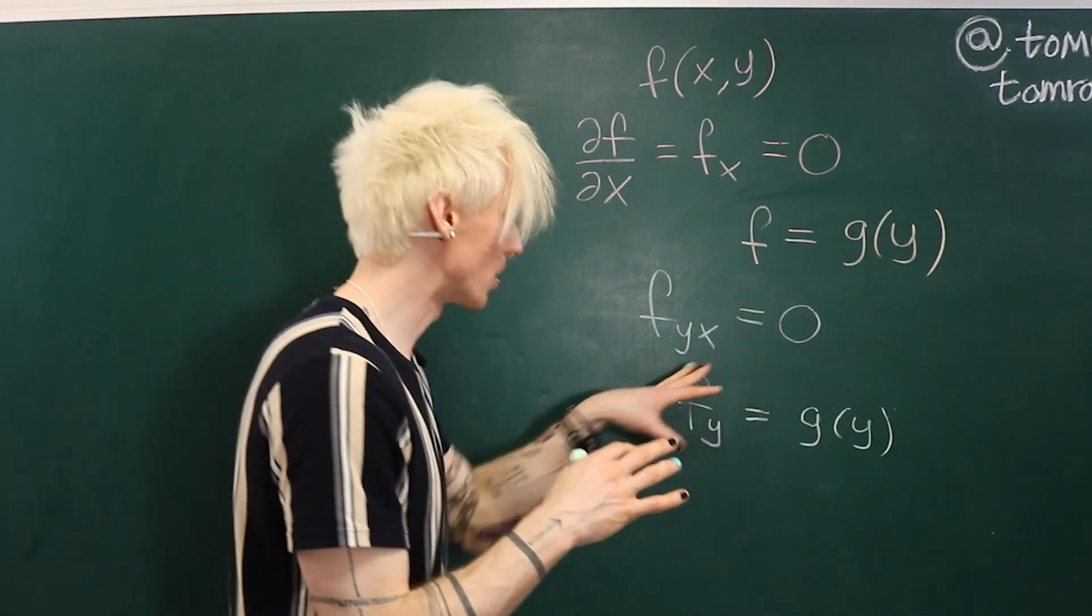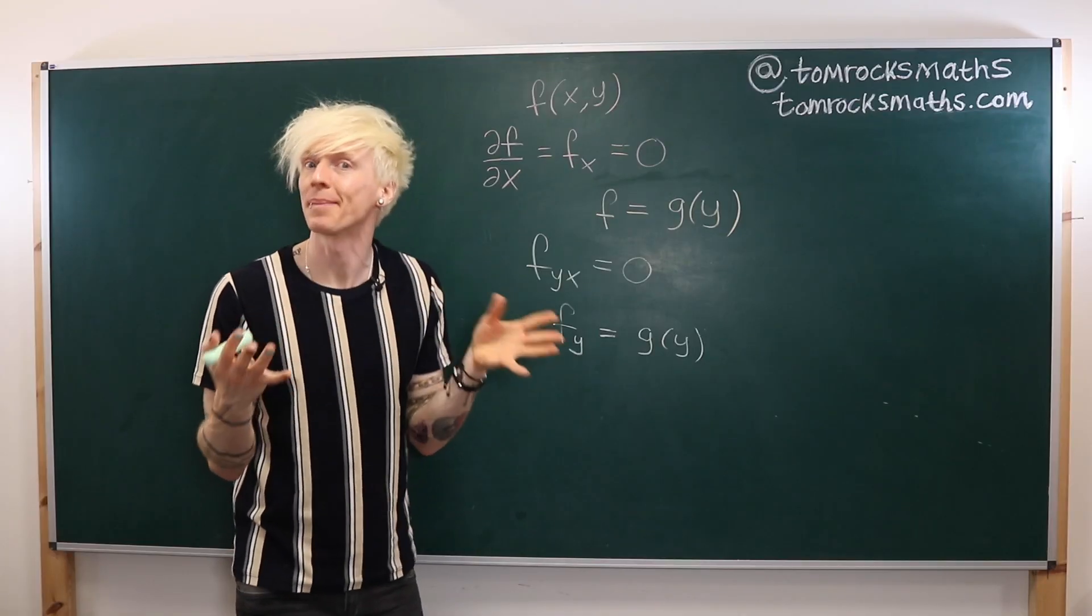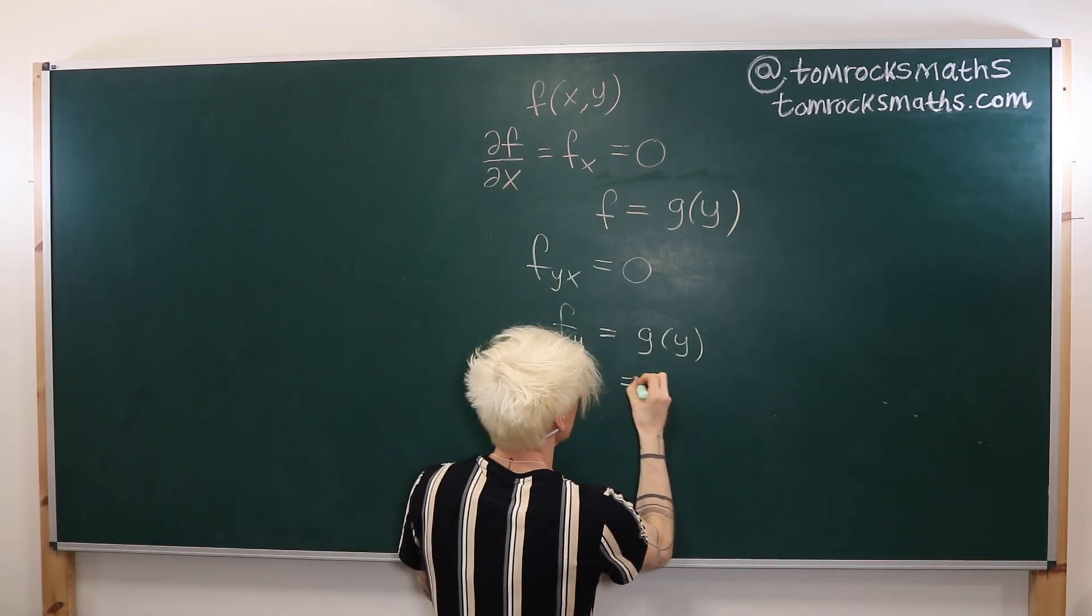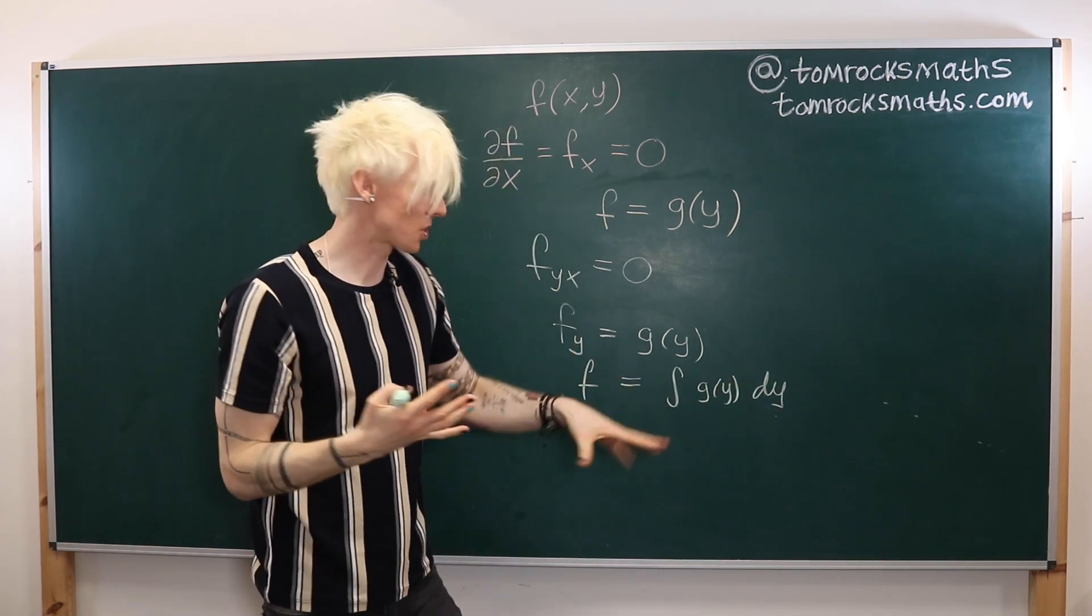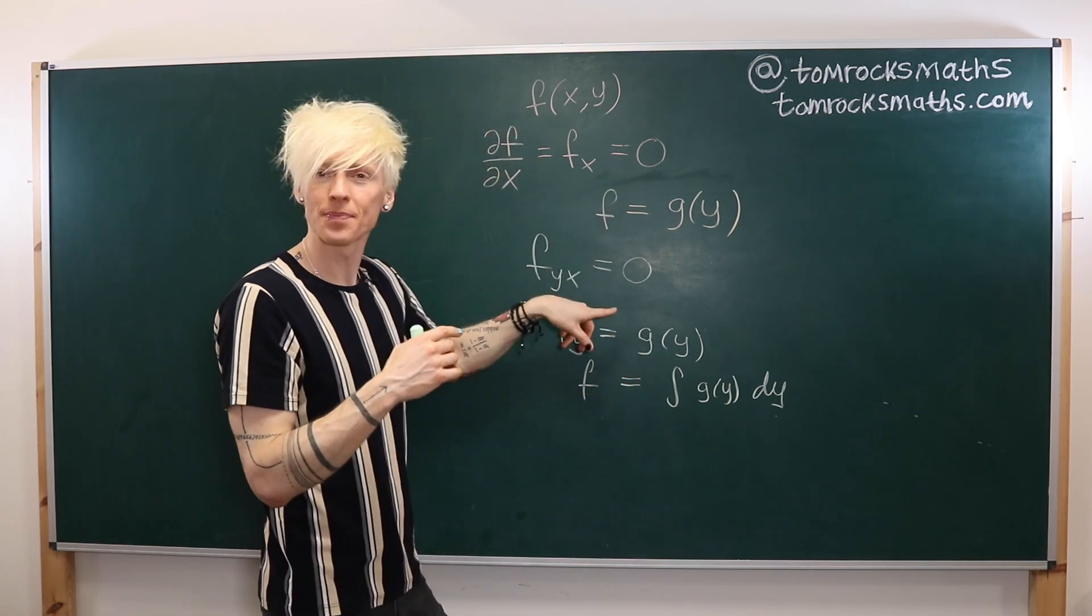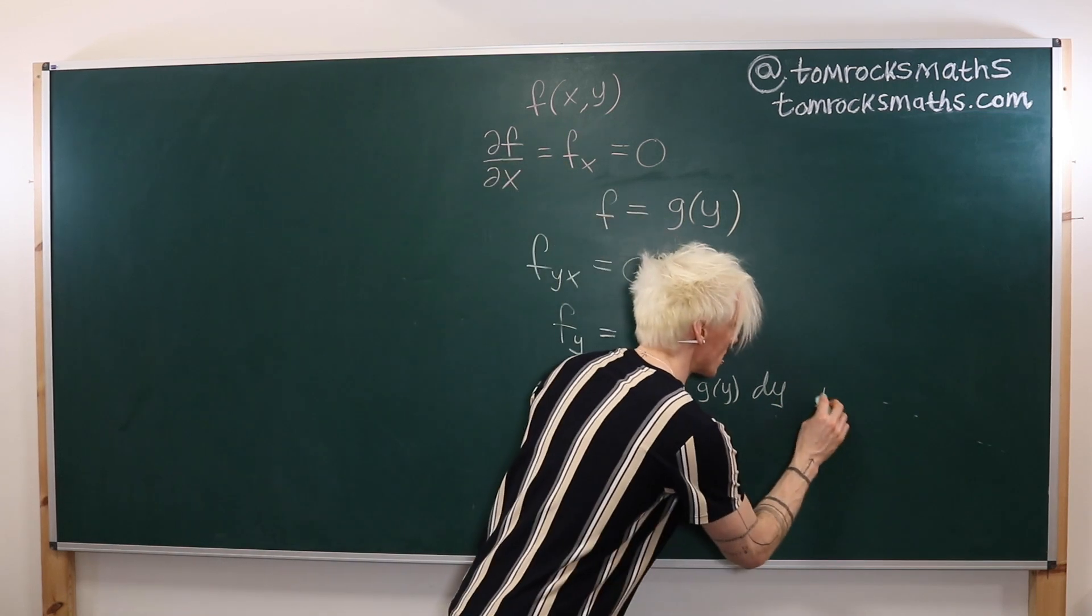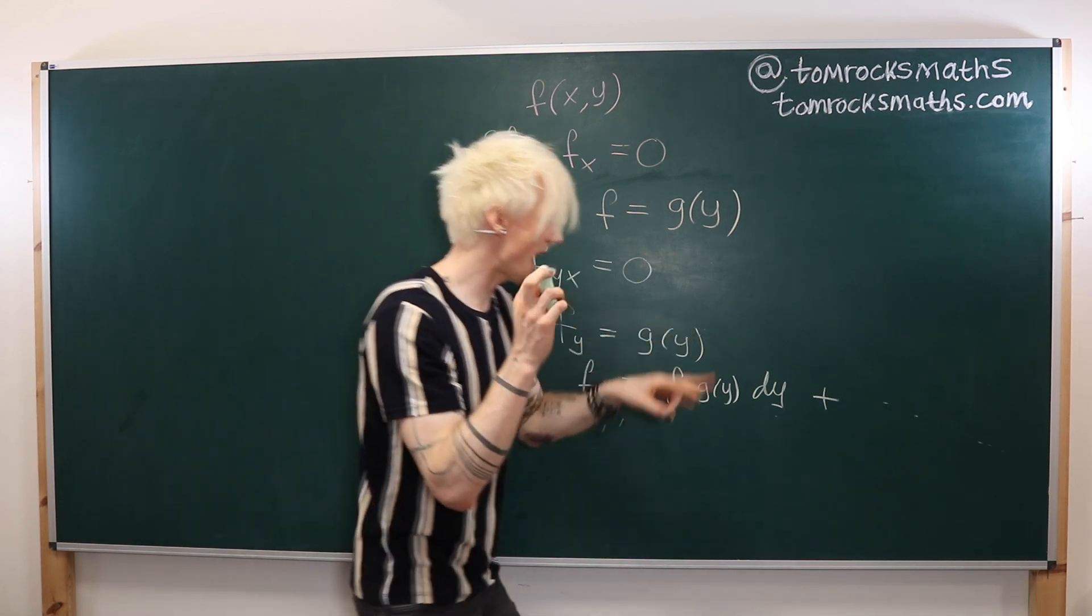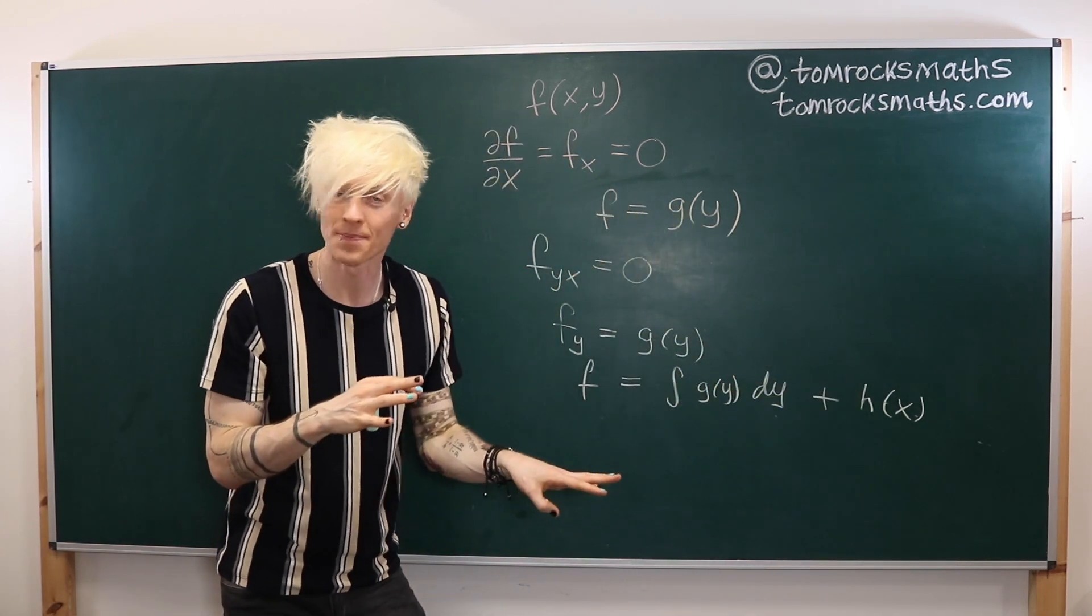Next we need to integrate both sides with respect to y. So let's just go ahead and try that and see what happens. So if I integrate the left with respect to y I get f. And then the right is going to be the integral of g of y. And we don't know what this function g of y is. So I can just write it as the integral of some unknown function. And then similar to how here we said differentiating a function of y with respect to x gives me zero, my integration constant has now become an integration function. So any function of x, so let's call it h of x, when differentiated with respect to y will disappear.